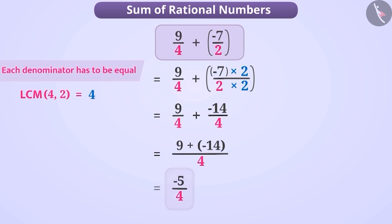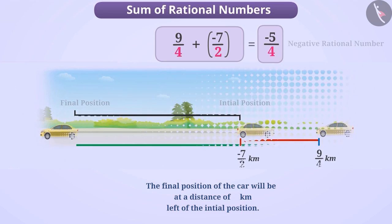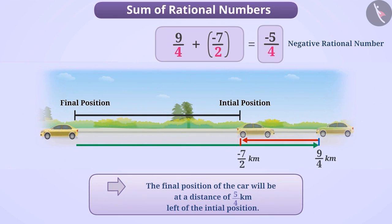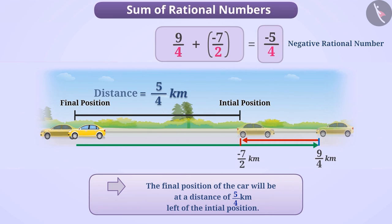Thus, the result of the sum of the numbers given is minus 5 by 4. When we talk about the sum of rational numbers, another important situation comes out here. The final position of the car will be at a distance of 5 by 4 km to the left of the initial position.